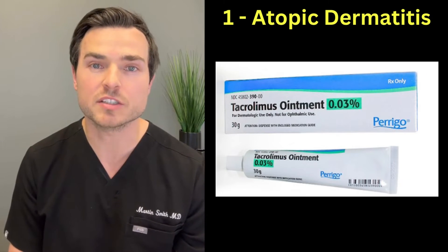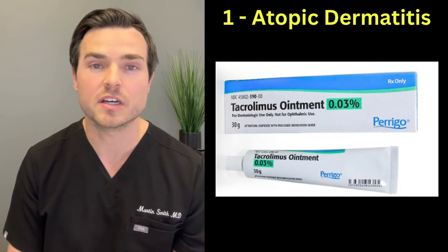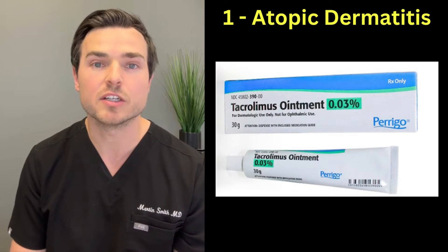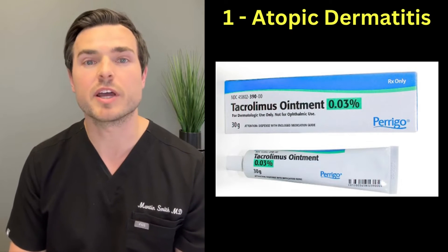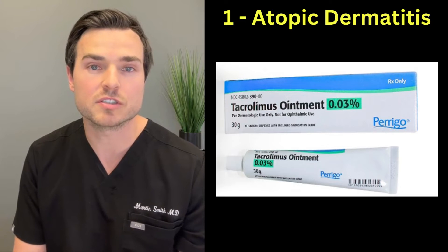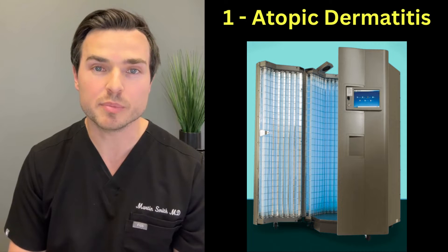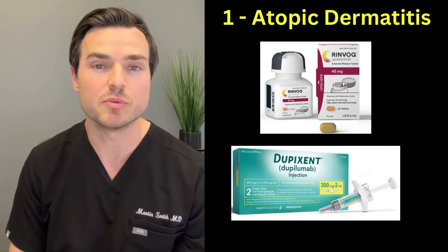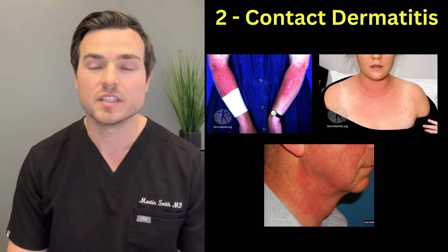Another treatment is topical calcineurin inhibitors, such as tacrolimus. This does not have the side effects of steroids, but it does carry an FDA black box warning that it could cause cancer — specifically lymphoma. However, recent randomized controlled trials have shown that tacrolimus use does not increase the risk of lymphoma. Other treatments include phototherapy and newer biologic agents such as Rinvoq, which is a tablet, or Dupixent, which is an injectable medication.